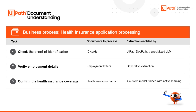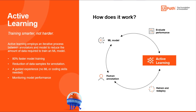ID cards can be easily processed out of the box with UiPath DocPath LLM, and you can use generative extraction for the employment letter as an unstructured document type. For health insurance cards that vary in format and layout, you can train your own model fast and easily with no coding skills required, owing to the newest active learning experience. Active learning is about training models for your own documents 80% faster than before. It's a guided iterative process between annotators and model to reduce the amount of data required for training.